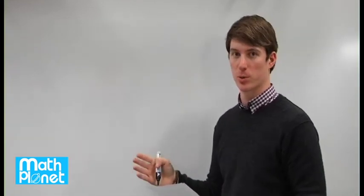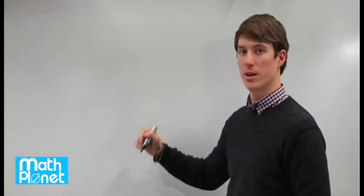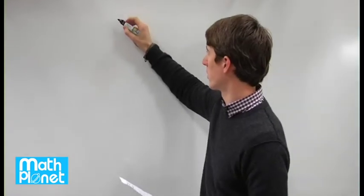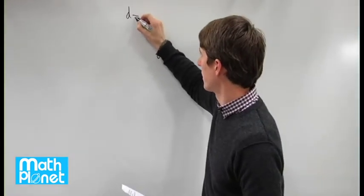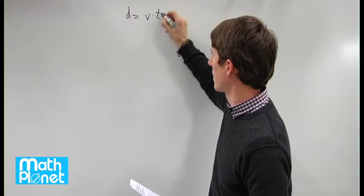So in this problem we have four laps of equal length run at different speeds. The formula for distance is distance equals velocity times time.